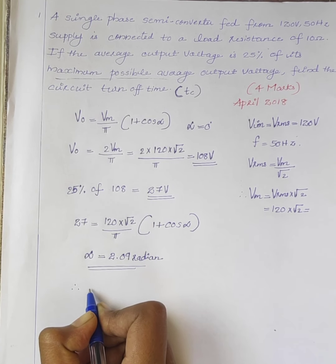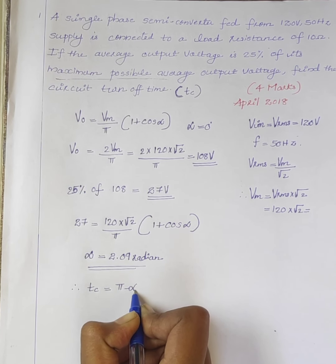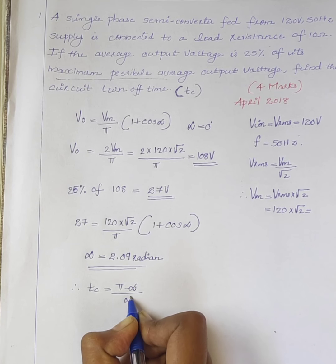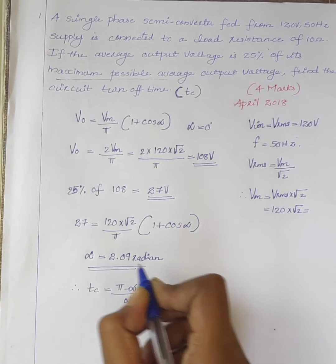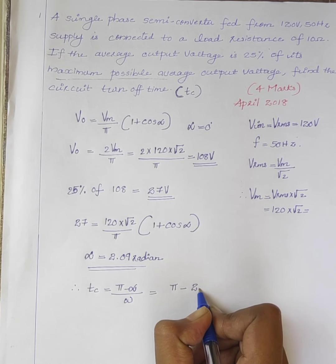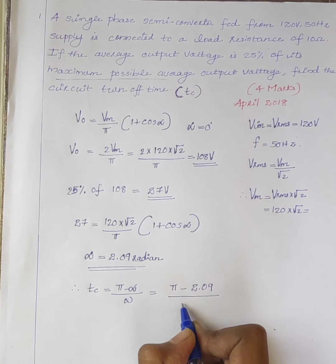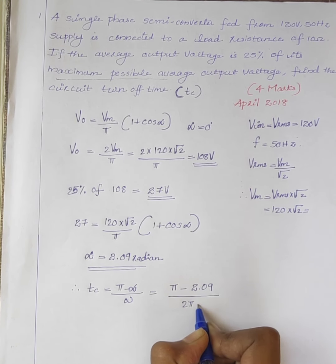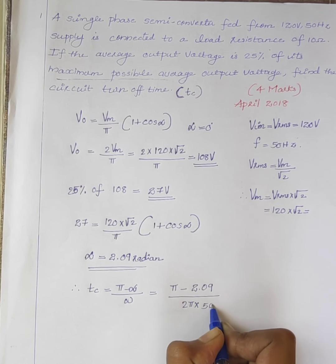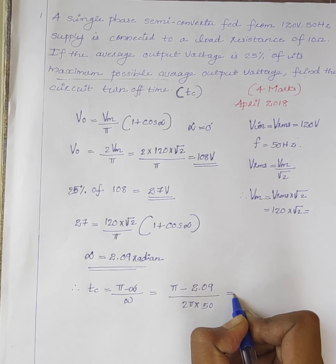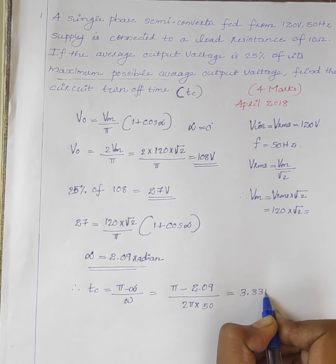Therefore, the circuit turnoff time Tc is equal to pi minus alpha divided by omega, which is equal to pi minus 2.09, divided by 2 pi f, where f is equal to 50Hz. Therefore, the circuit turnoff time is equal to 3.33 milliseconds.